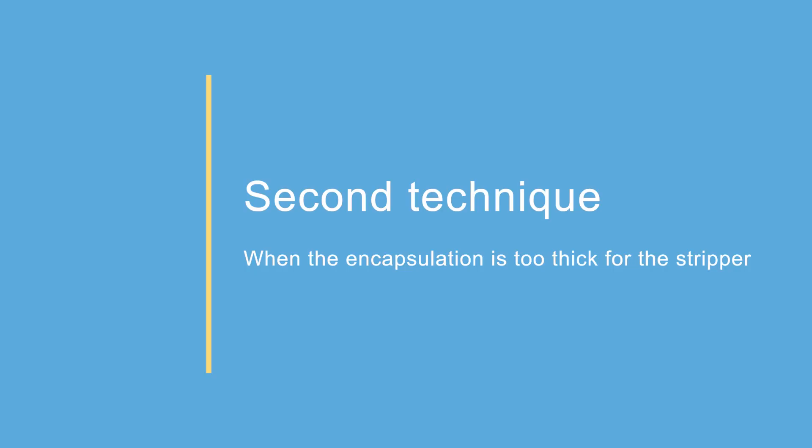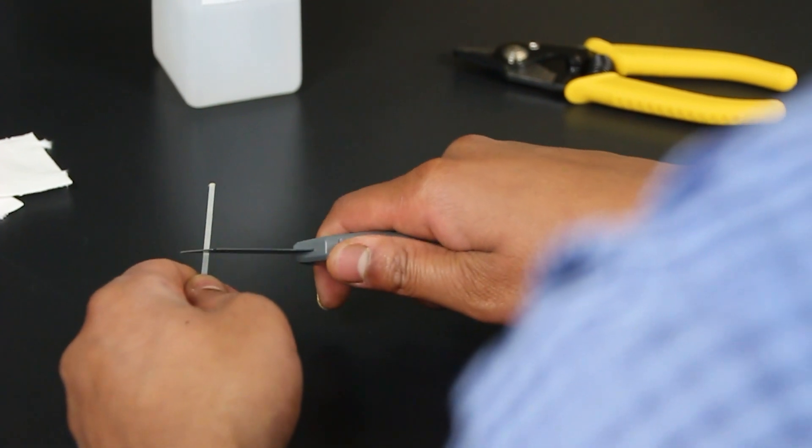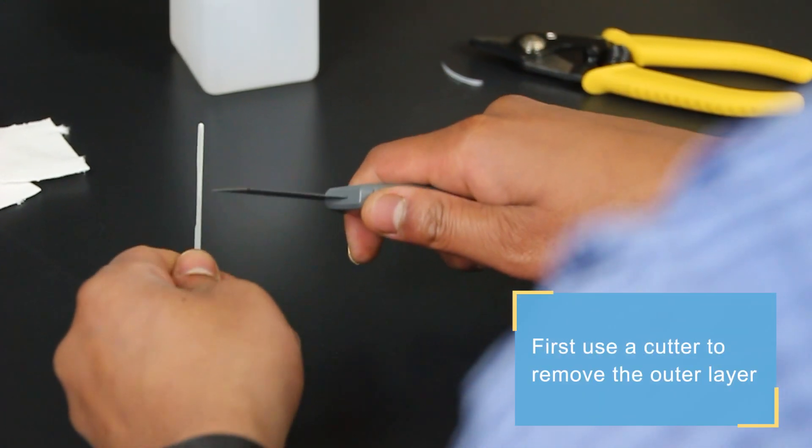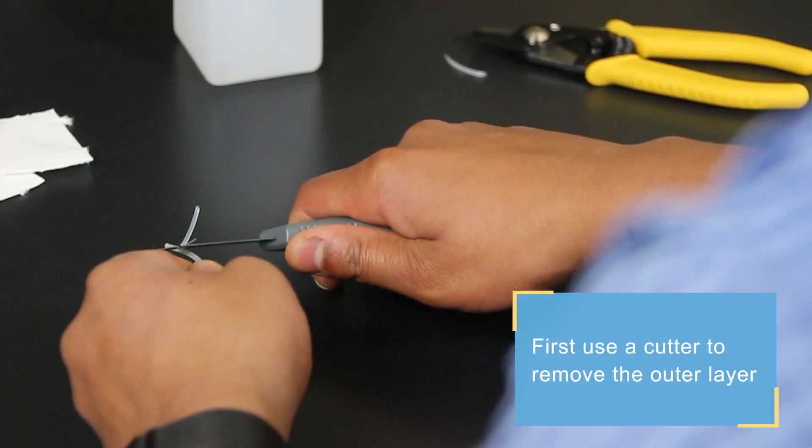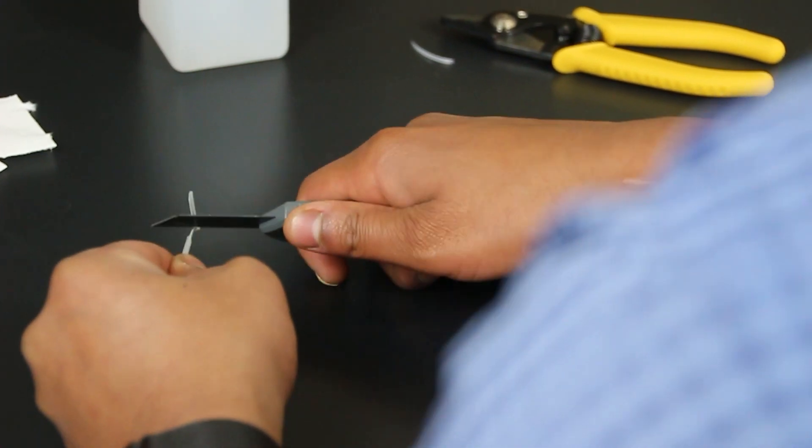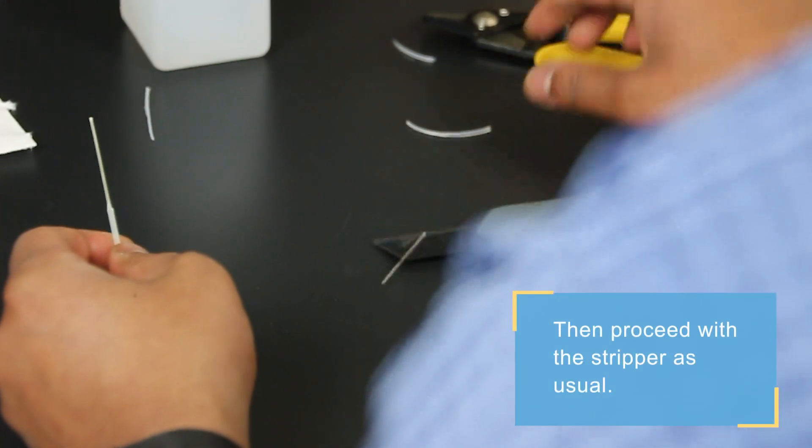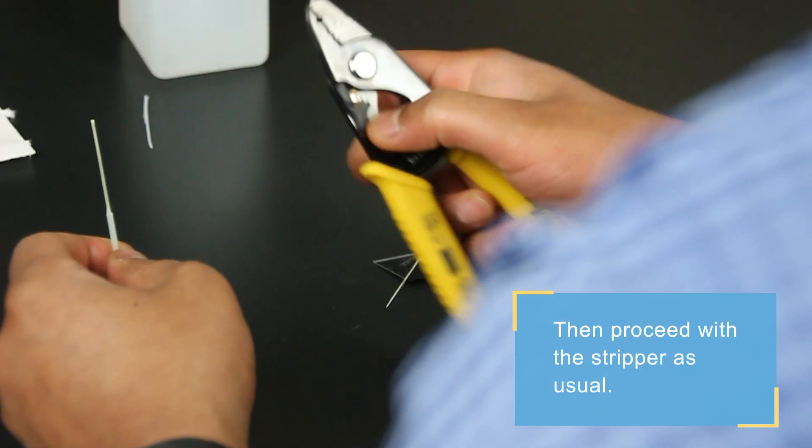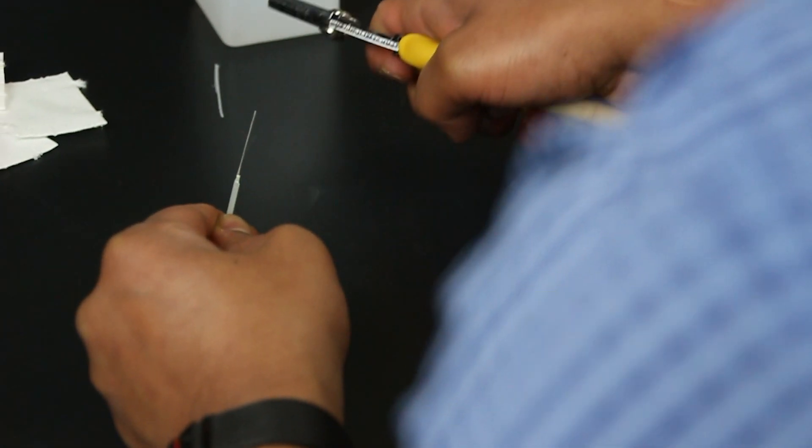The second technique is better to use if you encounter an encapsulation that is too thick for the standard stripper. That would apply when the outer layer is thicker than 1 mm. In that case, you should remove the encapsulation with a sharp cutter. Then, proceed with the stripper as shown previously.